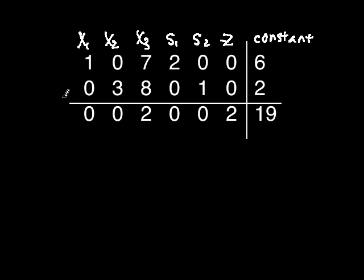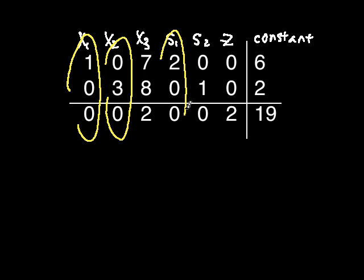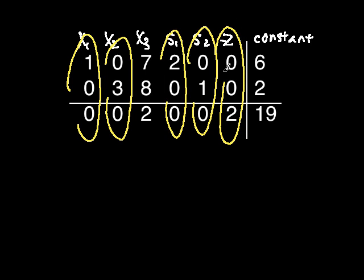Let's say that this is your final simplex tableau. To read the solutions, first circle all the columns that have all zeros except for one value. You can set up an equation with each of these values and the constant value that's right across from it in the same row.